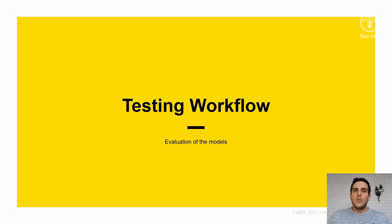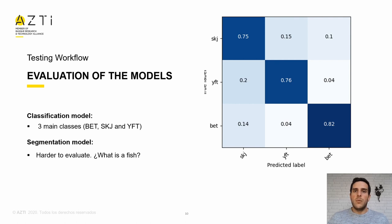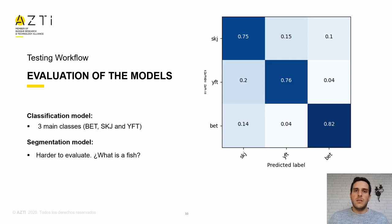In this workflow, we focus on obtaining the predictions of the models and seeing how they fit our data. We try to evaluate the two models separately. For the classification model, it is easy to have a precise estimation of accuracy. We have constructed a confusion matrix in which the vertical axis represents the actual class of an individual and the horizontal axis is the class predicted by our model. A perfect model would have a main diagonal of ones and zeros elsewhere. In our case, we can observe how our model correctly classifies approximately 3 out of 4 individuals.